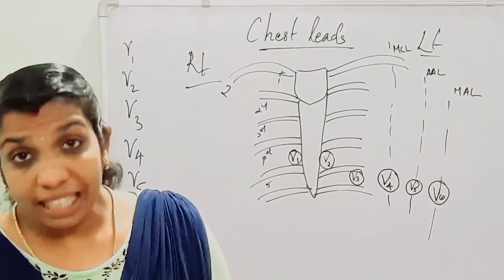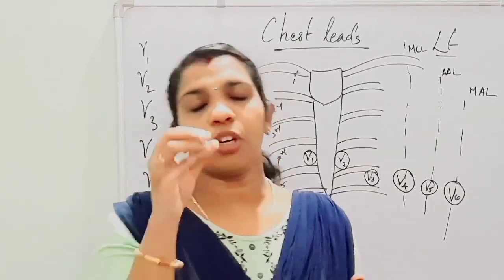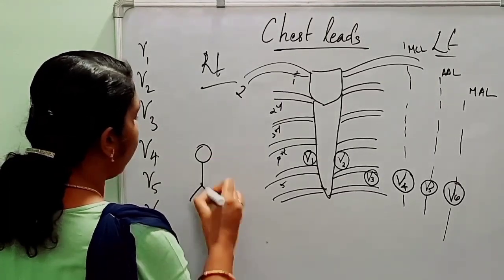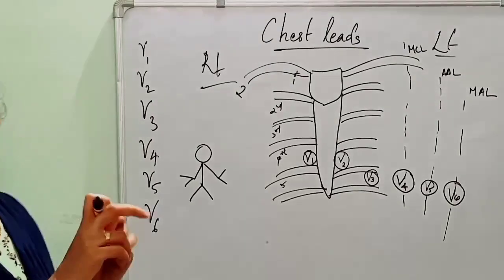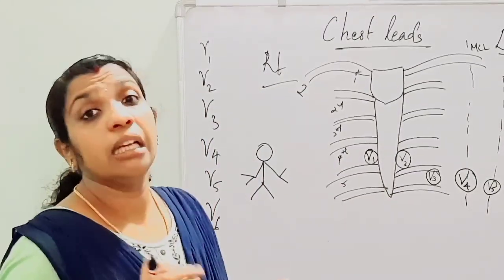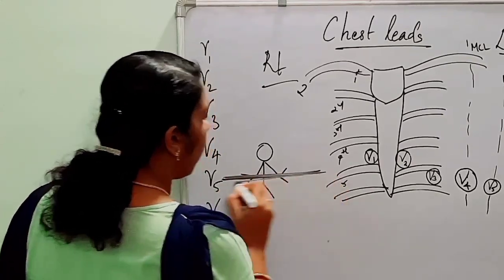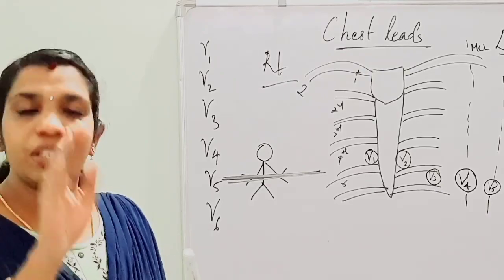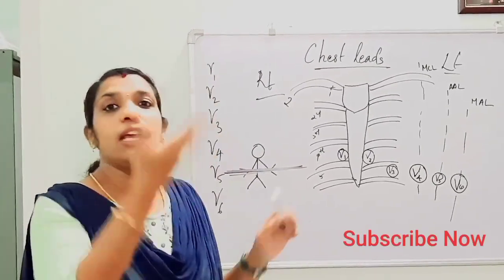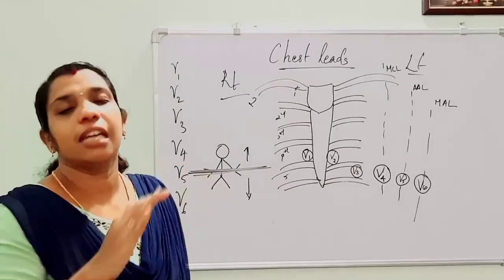You should now understand what the leads and electrodes are, the types of leads in a 12-lead ECG, and where they are positioned. An important concept: chest leads view the person in a horizontal plane — the plane that divides a person into an upper part and a lower part. So chest leads view the heart from the horizontal plane.